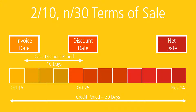This figure shows a timeline of the discount period and credit period on an invoice dated October 15th. The 2/10 N30 terms stipulate a cash discount if the bill is paid within 10 days; if not, the balance is due in 30 days. The cash discount period runs from October 15th to October 25th. The credit period, 30 days, extends from the invoice date through November 14th.